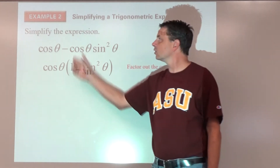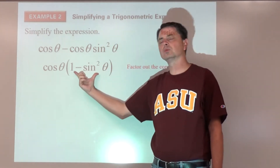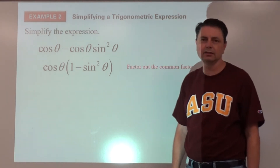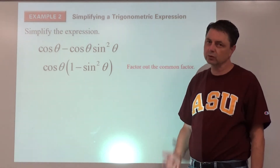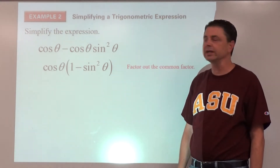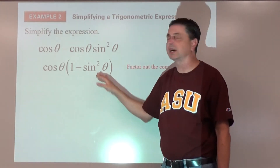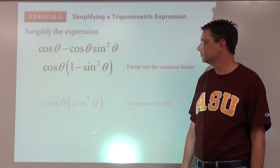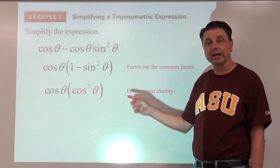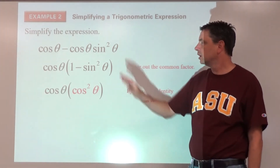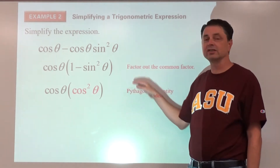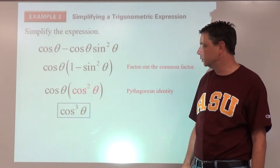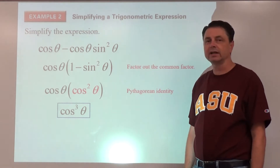After factoring out cosine theta, we look for identities in what remains. We notice one minus sine squared theta — that's one of our Pythagorean identities — and we can replace it with cosine squared theta. Multiplying together, cosine theta times cosine squared theta gives us cosine cubed theta as the final answer.